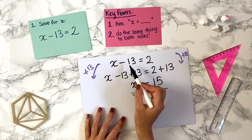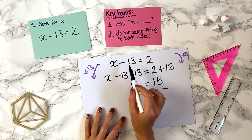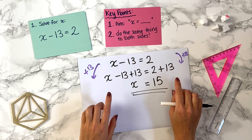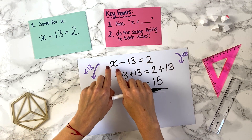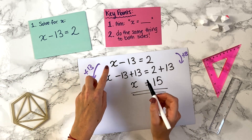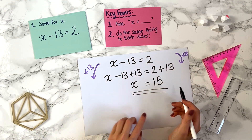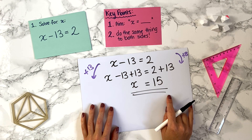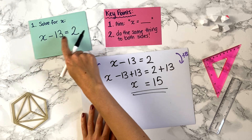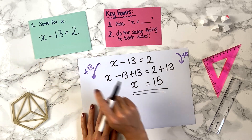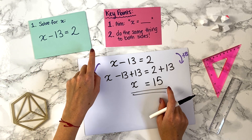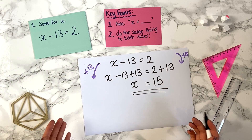All we had to do was think what's needed on the left-hand side to get x on its own — the answer was adding 13. With practice, you can do this step in your head: minus 13 plus 13 is zero, then 2 plus 13 is 15, giving x equals 15. You can check easily: is 15 minus 13 equal to 2? Yes, so we know we have the correct answer.